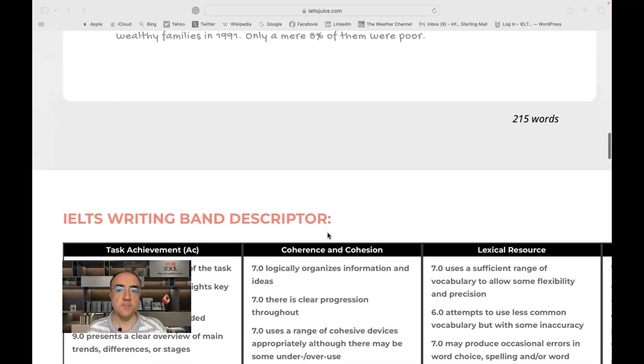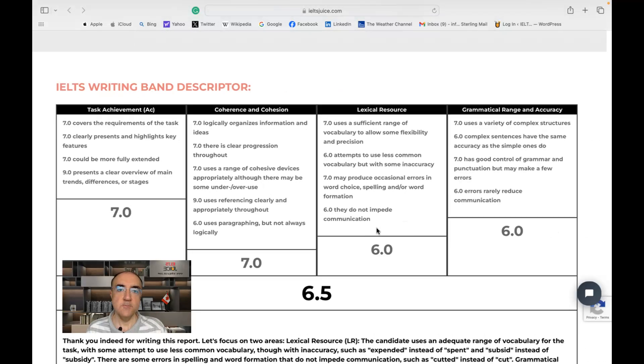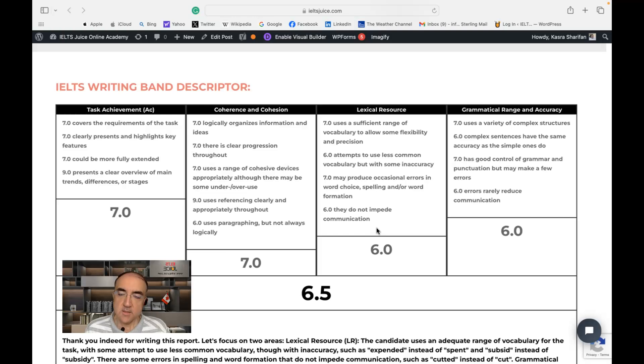215 words. Now, let's look at the overall band score. As I can see here, yes, with a safe strategy, the task achievement for this report is 7. The visuals were all addressed and reported. It doesn't have that level of accuracy, but it's not inaccurate. So, the information is accurately reported. It could be more accurate with little details that requires a sophisticated level of control over language.